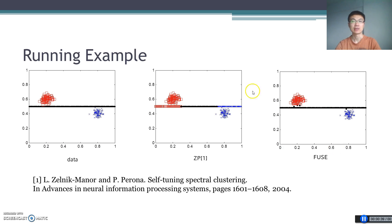We can see that the self-tuning spectral clustering ZP fails. However, our method Fuse achieves an impressive result.